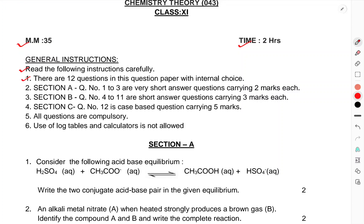Read the question instructions carefully. There are 12 questions in the question paper with internal choice. Section A, question number 1 to 3 are very short answer questions carrying 2 marks each. Section B, 4 to 11 short answer questions carrying 3 marks each. Section C, 12 is case based question carrying 5 marks.